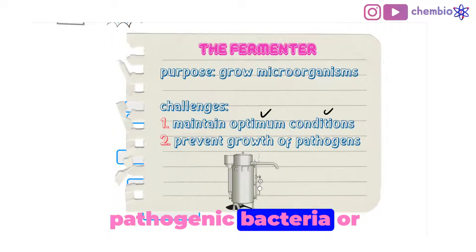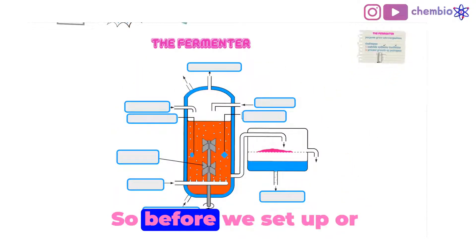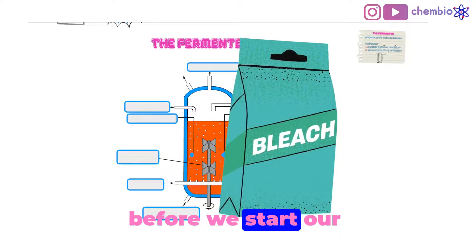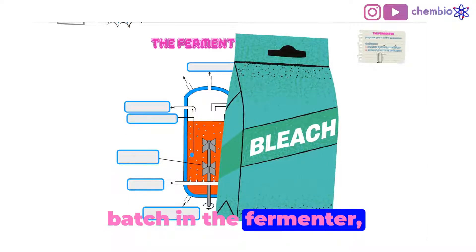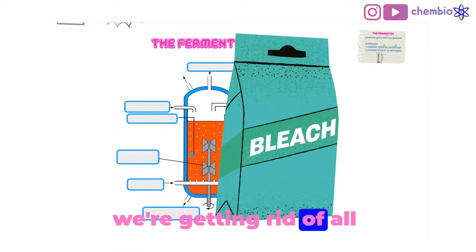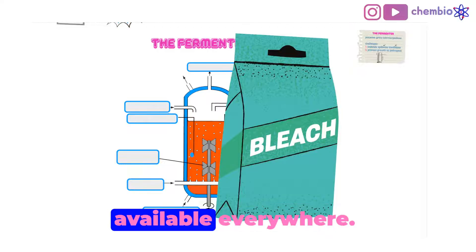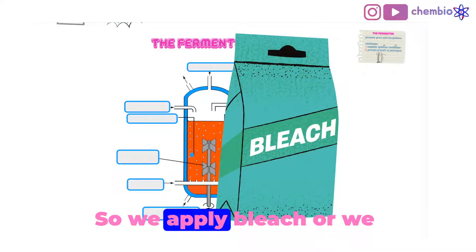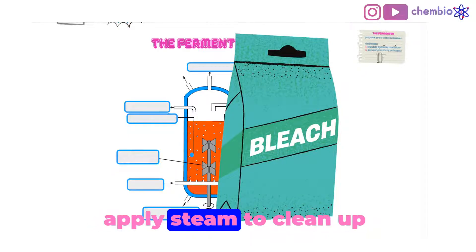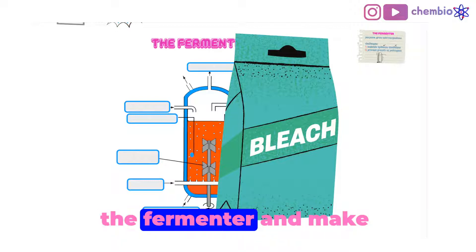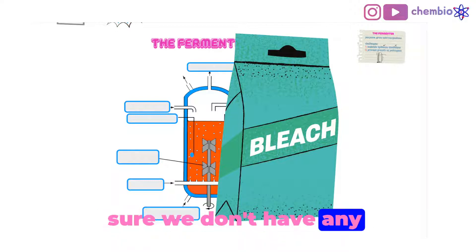We're not growing pathogenic bacteria or fungi. So before we start our batch in the fermenter, we must make sure that we're getting rid of all of the pathogens because those are available everywhere. We apply bleach or steam to clean up the fermenter and make sure we don't have any contamination.